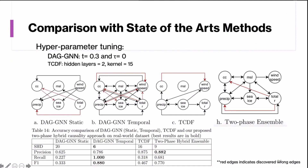We also compared with state-of-the-art methods: DACGN and TCDF. DACGN was originally developed for static variables rather than temporal ones, so we adapted it for temporal variables. TCDF was originally developed for time series data. Compared to both DACGN and TCDF, our two-phase hybrid ensemble still achieves the highest precision.